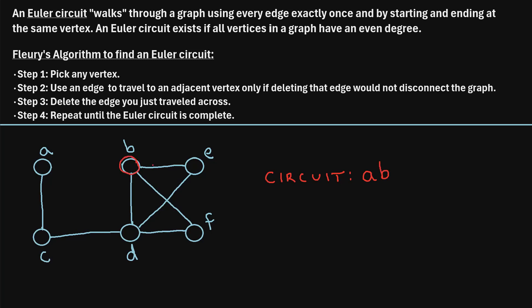Now we're at vertex B and we'll repeat the same process. We need to pick an adjacent vertex and check if we can travel there without disconnecting the graph. Let's say we go to vertex E. If we travel across this edge and delete it, the graph is still connected. So we can travel from B to E. So let's write E as the next vertex. By the way, there's more than one Euler circuit that exists in this graph — Fleury's algorithm is just a way to find one potential Euler circuit.